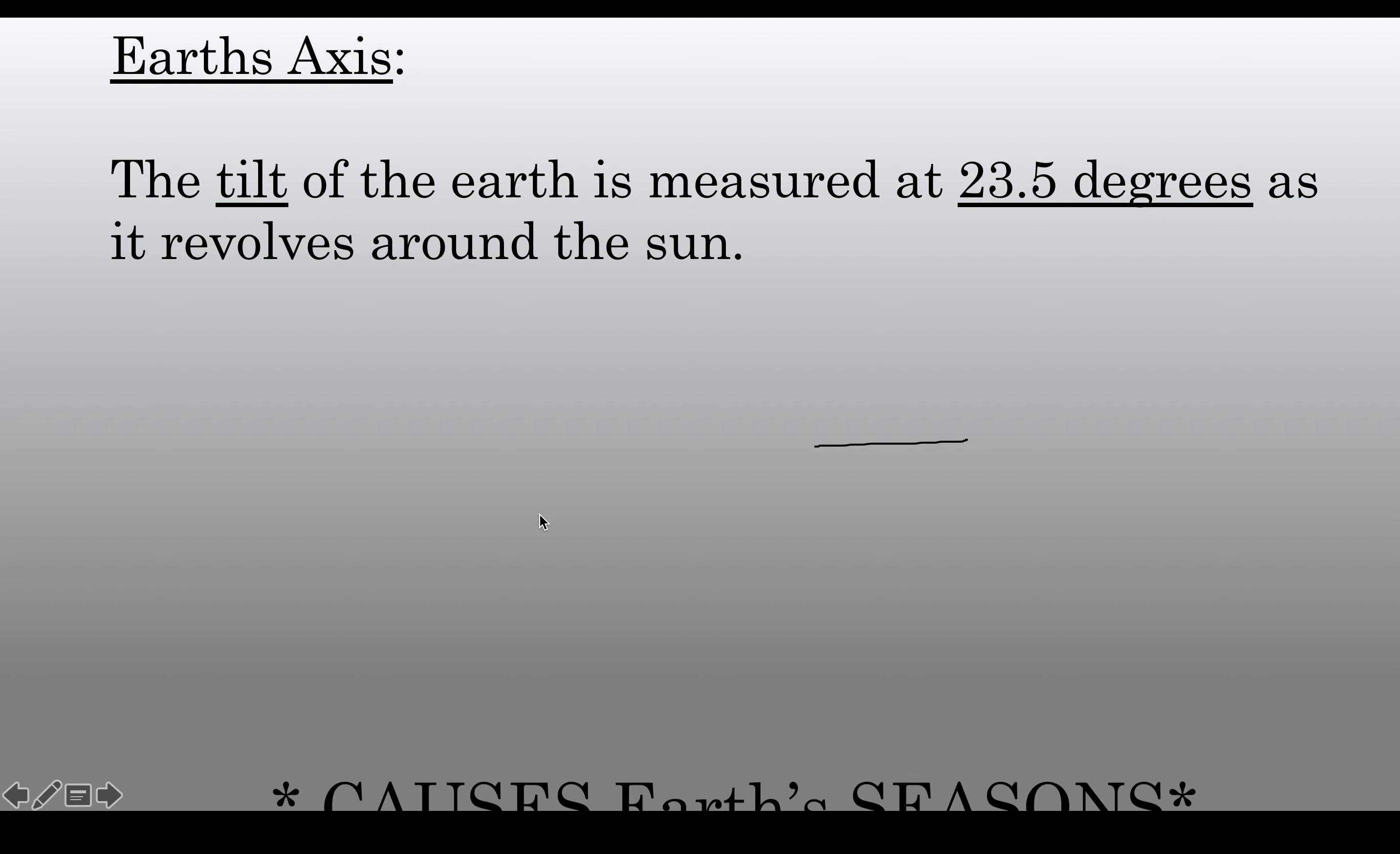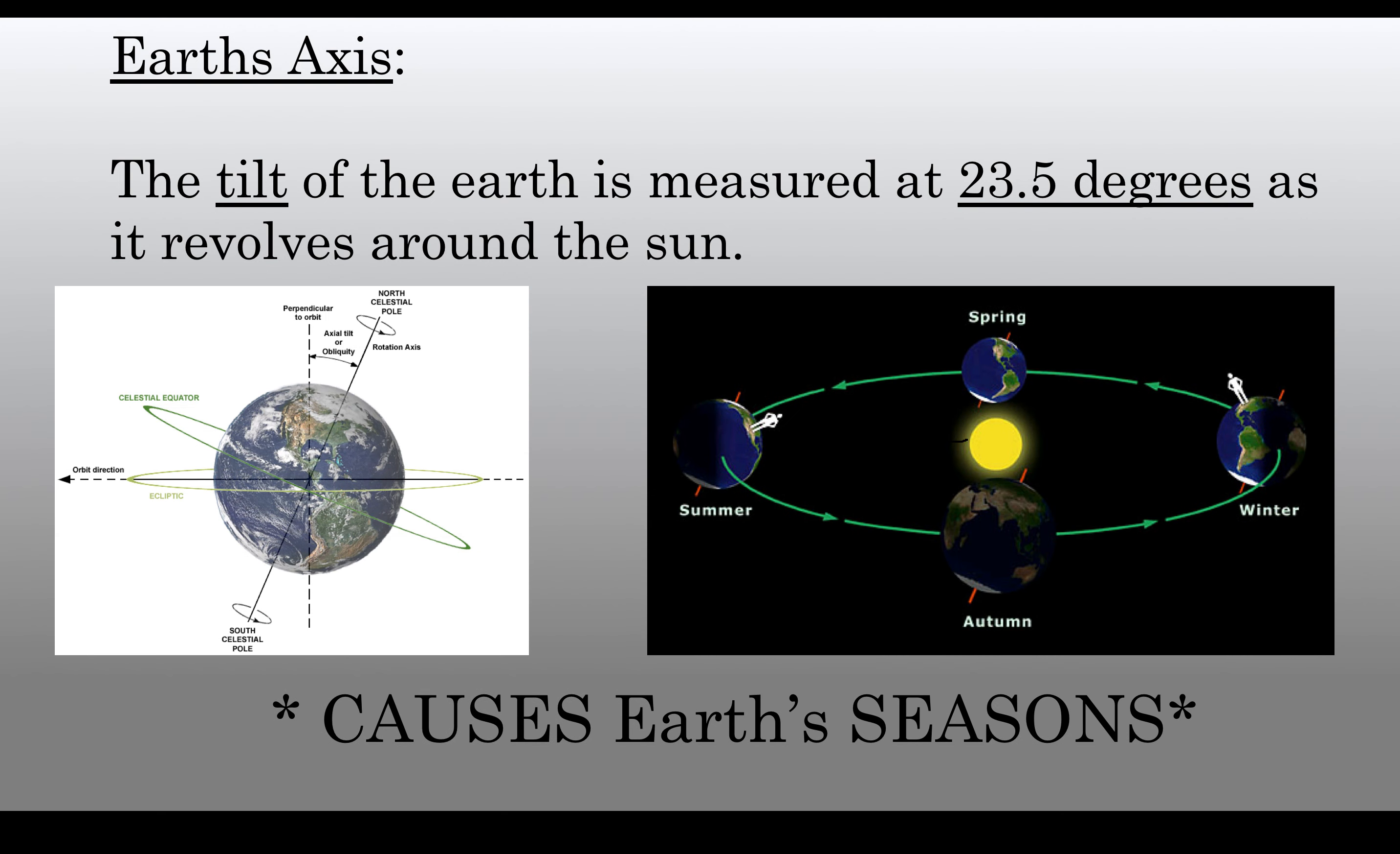The Earth's axis is 23.5 degrees as it revolves around the sun. It is always 23.5 degrees, despite our little precession or our little wobble that we have. In every case, it remains through every season at 23.5 degrees.